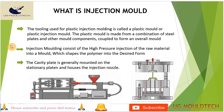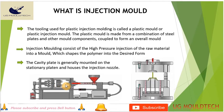This is the injection molding machine, and this is the mold. From here we pour the raw material — it will go through the hopper, barrel, heaters, and nozzle, and finally it goes to the mold to get the desired product. This is injection molding.